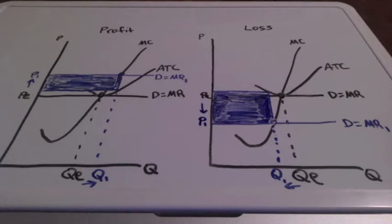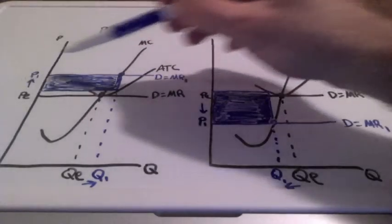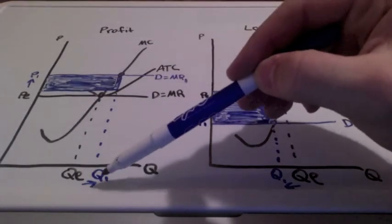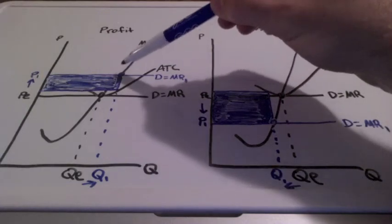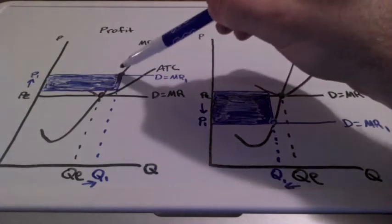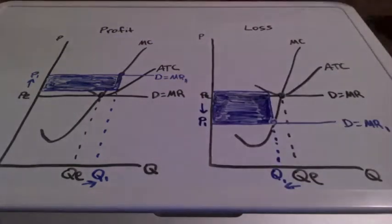relaying the information to the firm to increase their price and their quantity supplied. We find where marginal revenue equals marginal cost. Because it's above average total cost, we know we're experiencing profits.